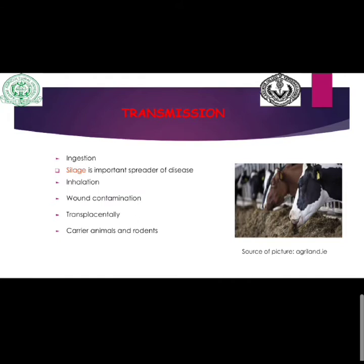Inhalation can be another route of transmission for this bacteria. Through wound contamination, if there are minor injuries in the oral mucosa, nasal mucosa, or conjunctiva, it may lead to disease. Transmission can also occur through the transplacental route, where Listeria crosses the placental barrier and affects the fetus. Carrier animals and rodents also transmit the disease.